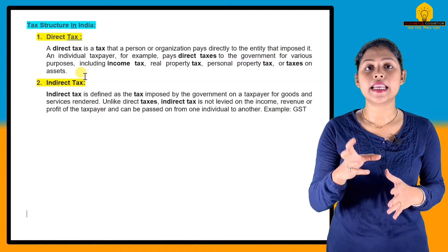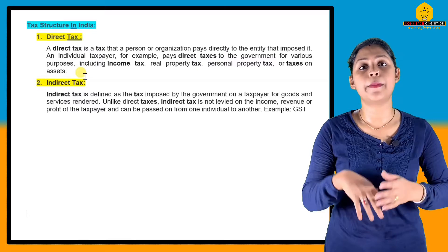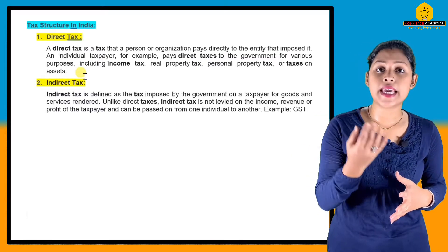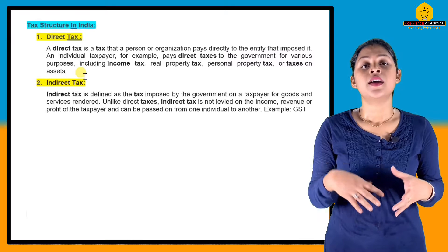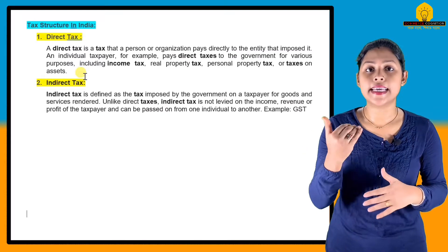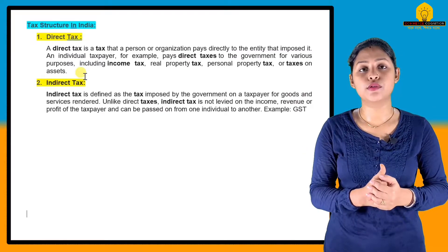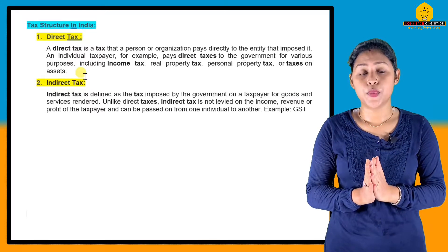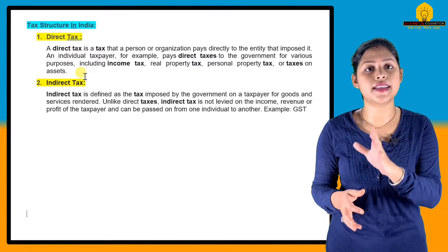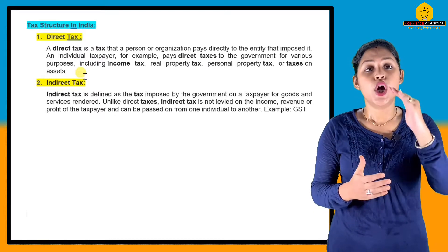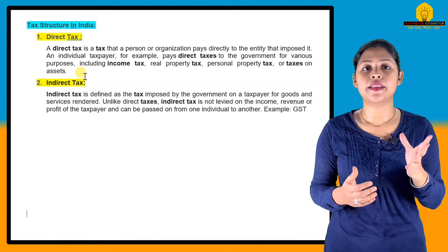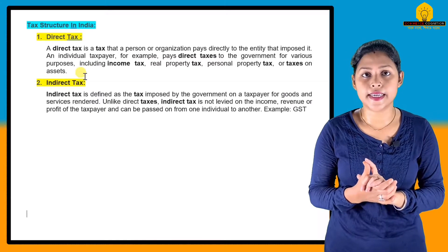Under the 1961 Income Tax Act, examples of indirect tax included excise duty, customs duty, central tax, state tax, and sales tax. However, in 2017, GST — Goods and Services Tax — was introduced, and all those previous indirect taxes were abolished and replaced by GST.